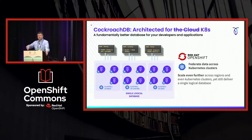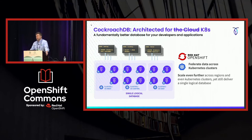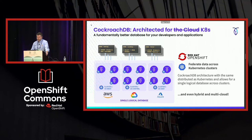Because of the way we scale out, we're inherently distributed. That means we can distribute across not only multiple nodes but multiple sites as well. In OpenShift and Kubernetes, that means we can distribute across multiple Kubernetes clusters, multiple OpenShift clusters, and provision a single logical database. That also makes us inherently multi-cloud — you can have an OpenShift cluster running in AWS, one in GCP, one in Azure, and have that be one database, not three databases you have to maintain and keep in sync.